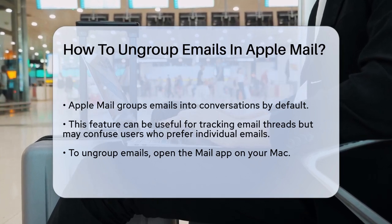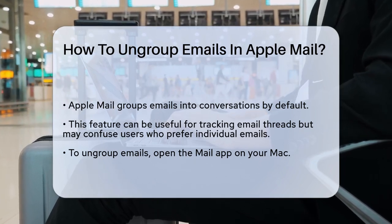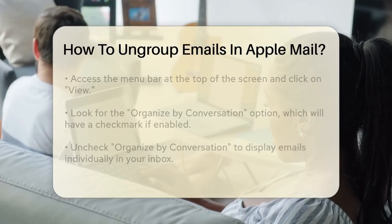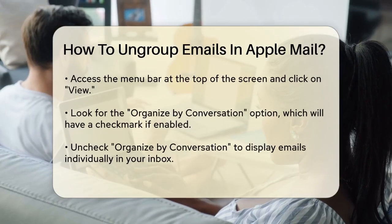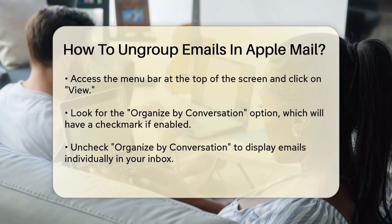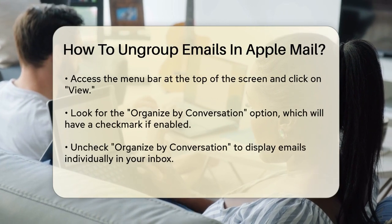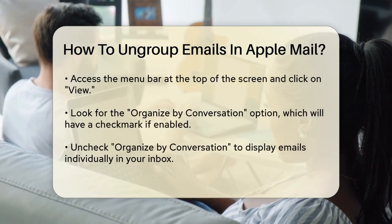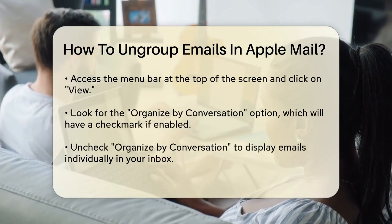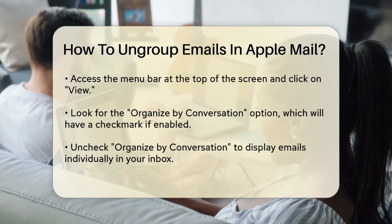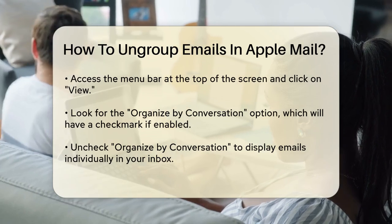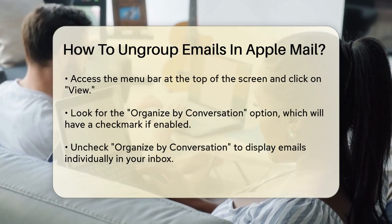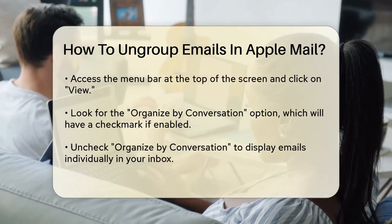Here's how you do it. Open the Mail app on your Mac and go to the menu bar at the top of the screen. Click on View, and then look for the option that says Organize by Conversation. You'll see a checkmark next to it if it's currently enabled. To turn off this feature,